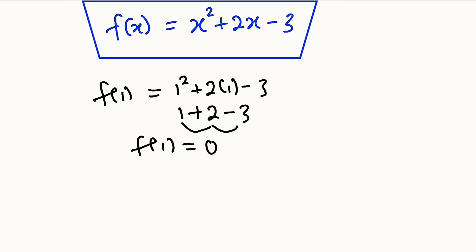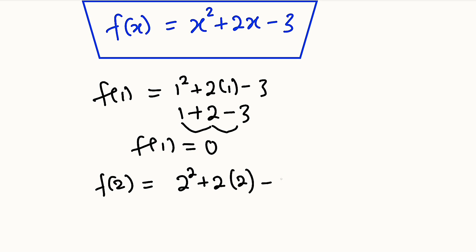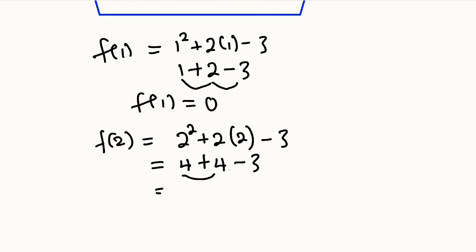For f(2): 2² + 2(2) − 3 = 4 + 4 − 3 = 8 − 3 = 5. So f(2) = 5.